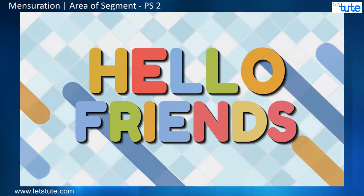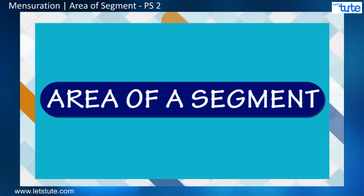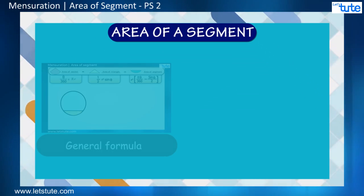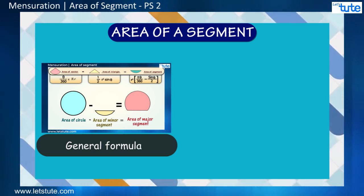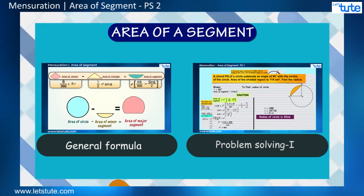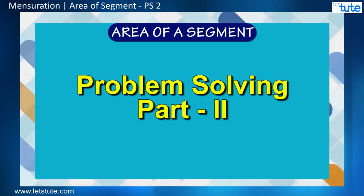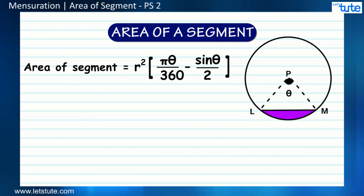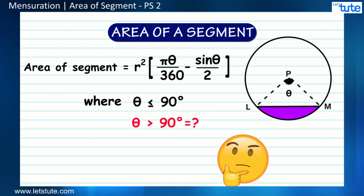Hello friends, here is yet another video on areas of the segment. If you can recollect, we had seen the derivation of the general formula to find the area of the segment and also solved a few different problems based on the same. In today's session, let's solve a few different types of sums. The general formula of area of a segment comes with the condition that the value of theta should be less than or equal to 90 degrees. Now, what if the value of theta is greater than 90 degrees?